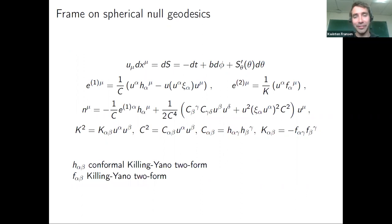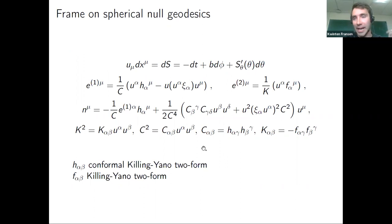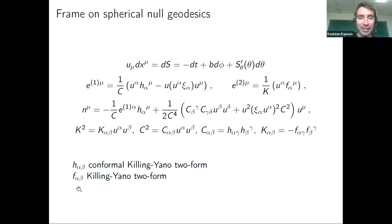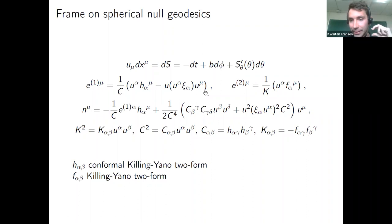Using these symmetry structures, you can construct the full null frame from the tangent vector u of the null geodesic plus the remaining frame vectors derived via the conformal Killing-Yano tensor. This lets you compute the null Fermi normal coordinates and in turn the Penrose limit, in full generality for Kerr.